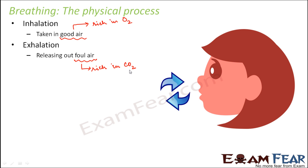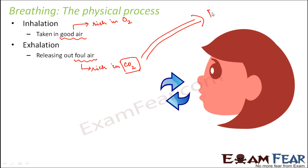The carbon dioxide released during exhalation is utilized by plants for the process of photosynthesis. That is how the carbon dioxide we exhale gets utilized in the atmosphere, because the plants take it in. So here we are going to talk about these two processes — inhalation and exhalation — and what happens to the various respiratory organs during them.